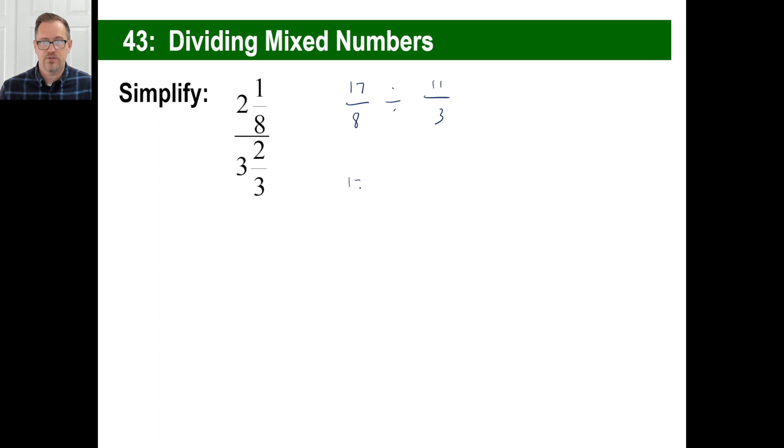So 2 and 1/8 is 17/8, and we could just put divided by, it's the same thing. 3 and 2/3, 3 times 3 is 9 plus 2 is 11. Boom. You know how to do dividing fractions. You just flip the second one. Think about this. This is about 2 divided by about 4. What's 2 divided by 4? About a half, right? A little more than a half, because this is a little less than 4. It's a little more than 2. So whatever you get here, it should be a little more than half.